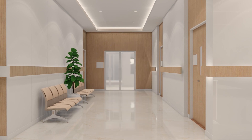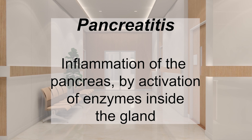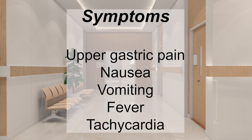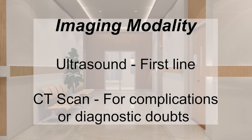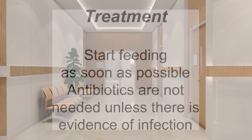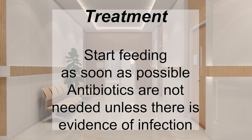Let's summarize what we've seen today. Acute pancreatitis is the inflammation of the pancreas that occurs by activation of the enzymes inside the gland. This causes acute pain in the epigastric region and can lead to nausea, vomiting, fever, and tachycardia. Ultrasound is the first-line imaging modality, but we should use CT for complications or if we have diagnostic doubts. For treatment, we have to replace fluids, and from the evidence, it's better to use LR. Also, you should start feeding as soon as possible. Antibiotics are not needed unless there's evidence of infection.